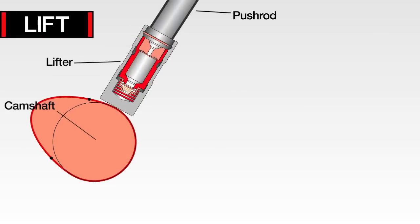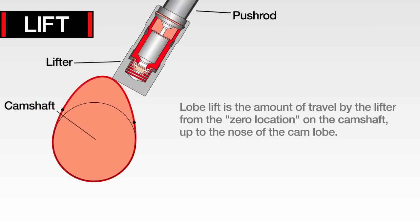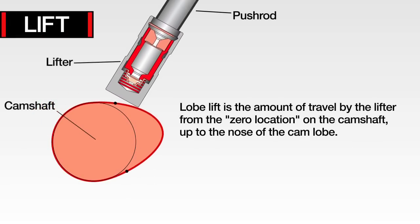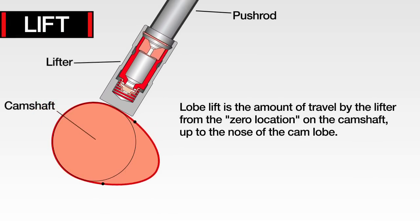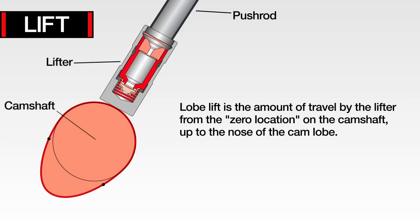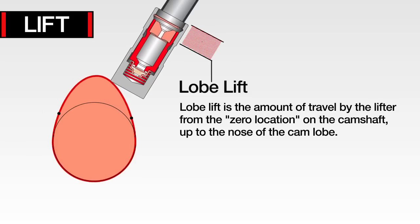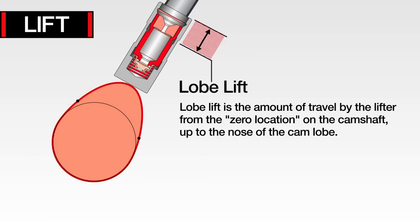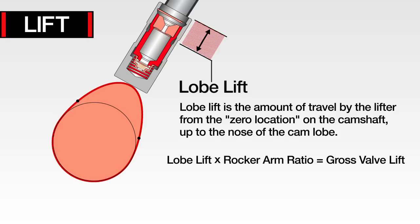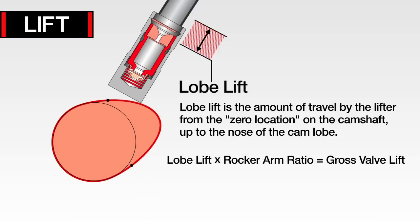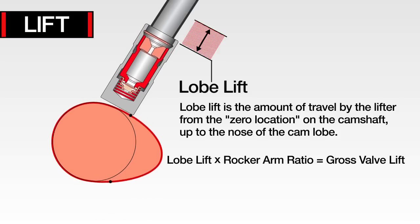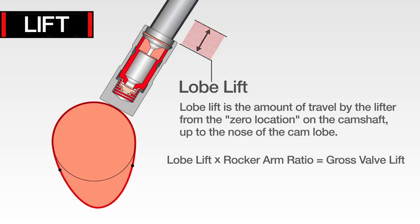Let's begin with lift. Lobe lift, or tappet lift, is the amount of travel by the lifter from the zero location on the camshaft — or base circle of the cam at zero — up to the nose of the cam lobe. This measurement multiplied by the rocker arm ratio generates the gross valve lift figure. The formula is: lobe lift times rocker arm ratio equals gross valve lift.